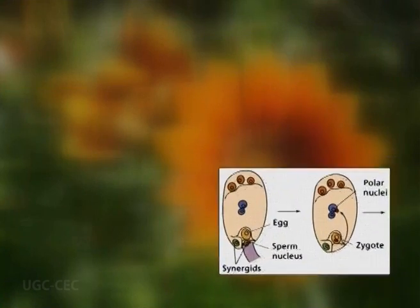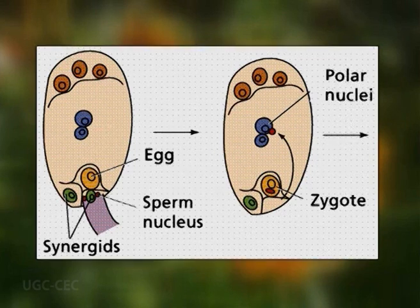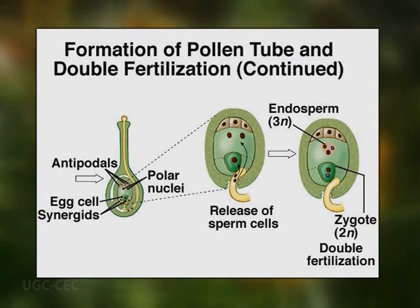After arriving in the synergid, the pollen tube ruptures and releases its contents, which include two male gametes or sperm cells. These two gametes are involved in the act of double fertilization — they fertilize the egg and the secondary nucleus, forming the zygote and primary endosperm nucleus respectively, which give rise to the embryo and endosperm in the developing seed.